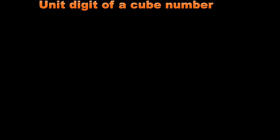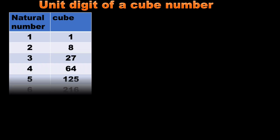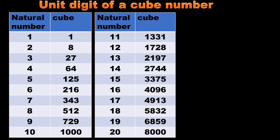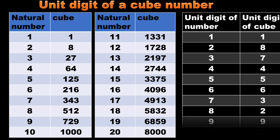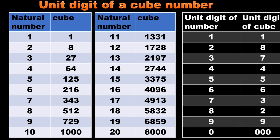Next, let's look at the unit digit of a cube number. Observing the pattern: when the unit digit of a number is 1, the unit digit of its cube also ends with 1. When it is 2, its cube ends with 8. The digits 1, 4, 5, 6, and 9 remain the same in the cube.